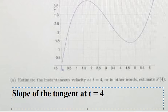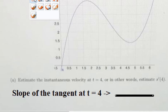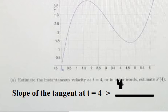At t equals 4, if we want to find the slope, that should be y2 minus y1 over x2 minus x1.